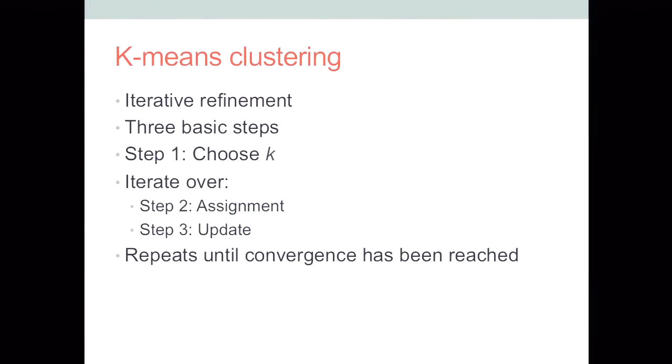So the way that this works is basically a process of iterative refinement. There are three basic steps. The first step is you choose your k clusters. Then it iterates over the next two steps, which are assignment and update. In the assignment step, observations are assigned to the clusters they're most similar to. And then in the update step, the cluster center is recalculated to the mean of the new cluster based on the assignment. It basically does this over and over again until convergence has been reached, meaning that the observations no longer move around and the cluster centers no longer move around.